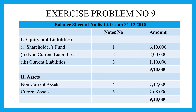Now the balance sheet format: on the equity and liabilities side — shareholders fund (working note 1) is Rs. 6,10,000; non-current liabilities (working note 2) is Rs. 2,00,000; current liabilities (working note 3) is Rs. 1,10,000 — totalling Rs. 9,20,000. On the assets side — non-current assets (working note 4) is Rs. 7,12,000; current assets (working note 5) is Rs. 2,08,000 — totalling Rs. 9,20,000. Assets and liabilities are balanced.